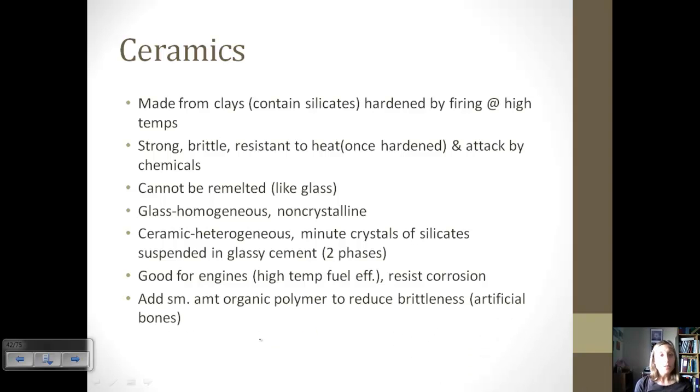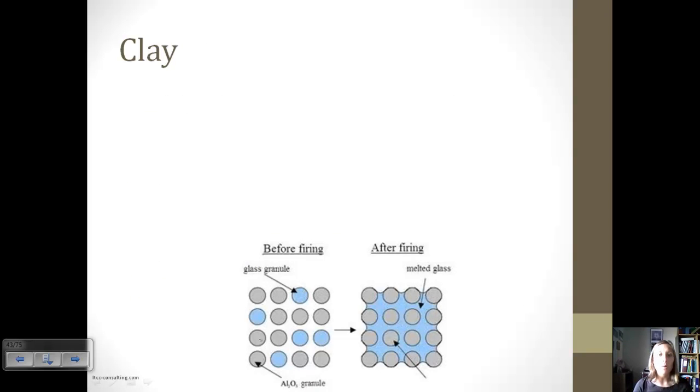We can try to reduce the brittleness of ceramics by adding a small amount of organic polymer. And this polymer is also being used for things like artificial bones, because they are less brittle, but they're still hard and kind of like a real bone. So those can be used in those type of things as well.